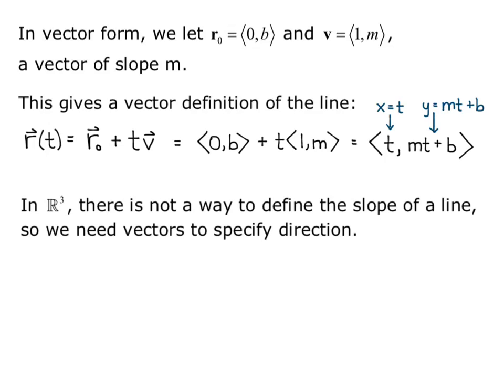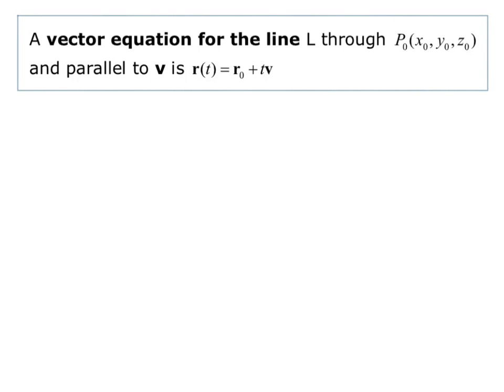In R3, three dimensions, there is not a way to define the slope of a line, so we need vectors to specify direction. We'll start with a vector equation for the line L through the point P0, and we'll call that point x0, y0, z0, and the line is parallel to v. Then the vector equation is R of t equals R0 plus tv.